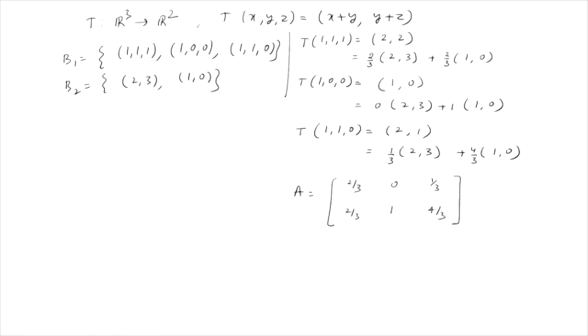So the matrix corresponding to this linear transformation with respect to these two bases has first column [2/3, 2/3]ᵀ, second column [0, 1]ᵀ, and third column [1/3, 4/3]ᵀ. It is of order 2×3. This is the corresponding matrix for this linear transformation.